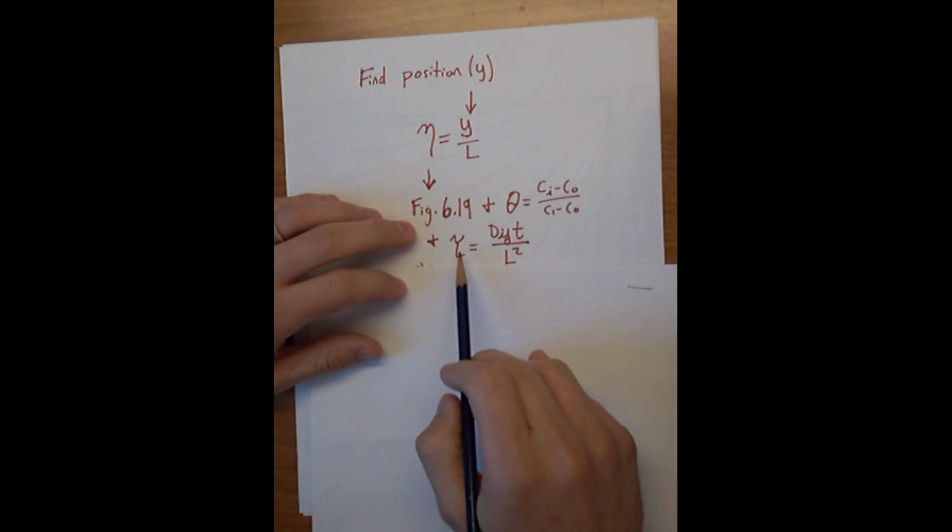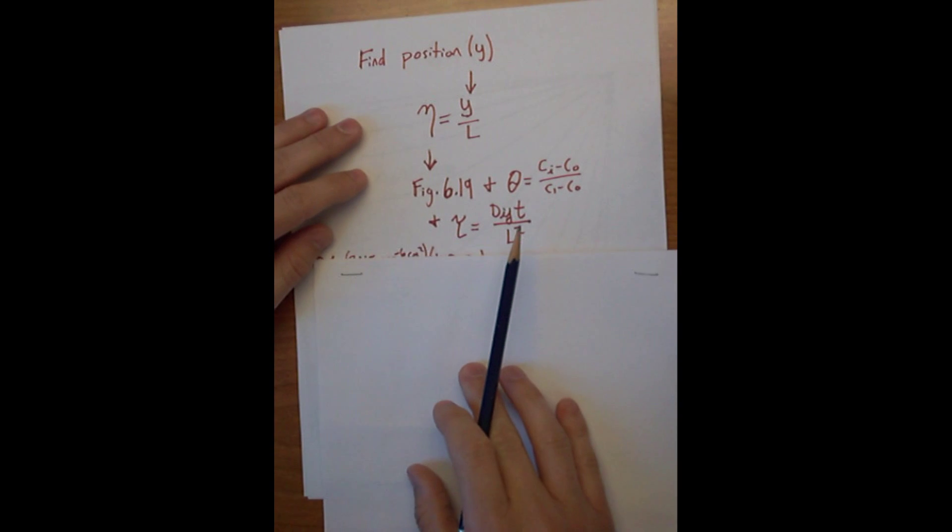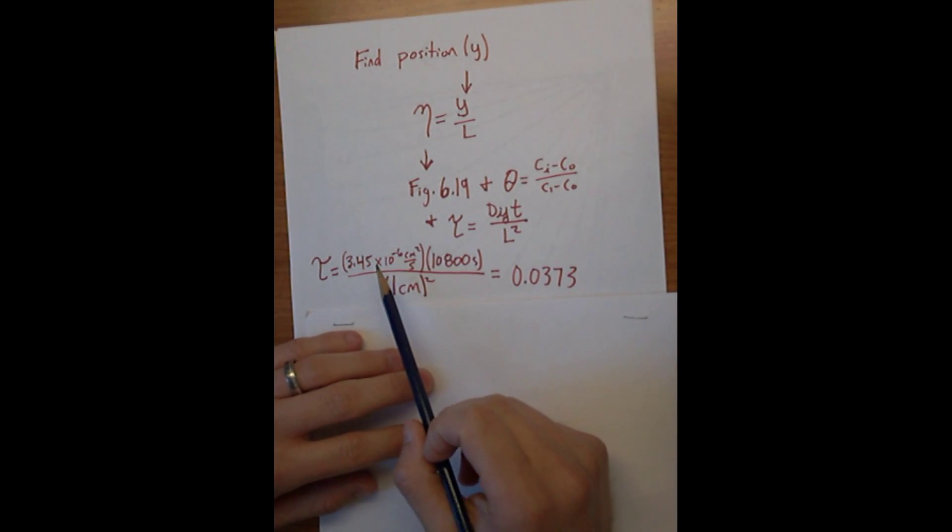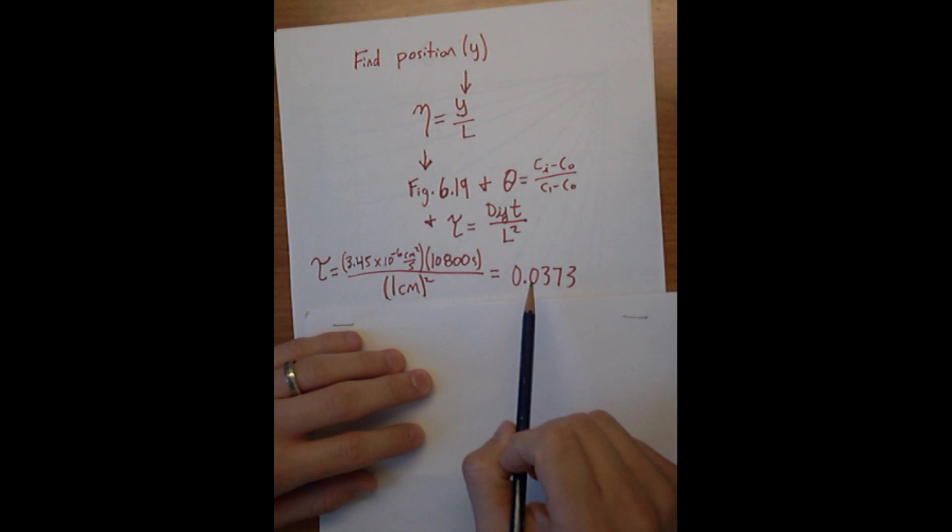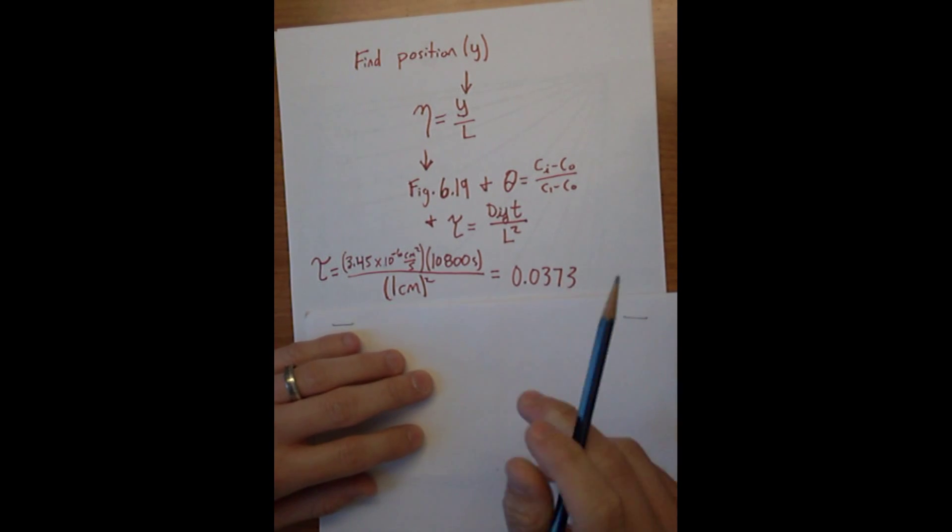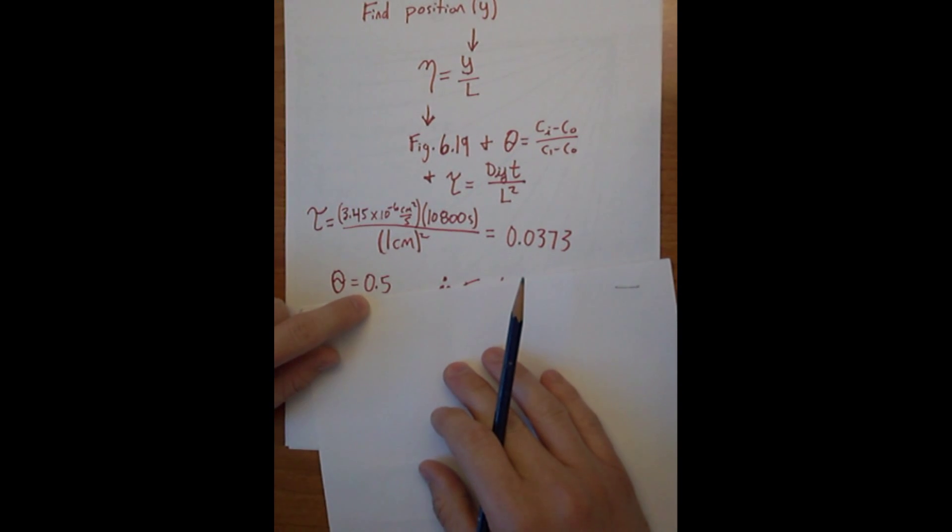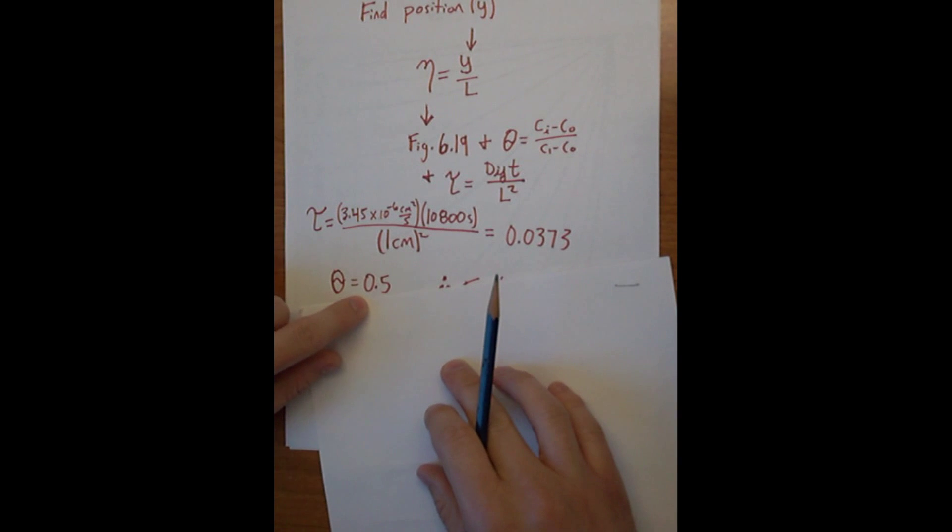If we first calculate these two, then we can use the book to figure out eta, and then we can solve for Y. First, non-dimensionalized time: plug in our diffusion coefficient, the time (three hours), and the half thickness (one centimeter). We get the non-dimensionalized time is 0.037. And we figure out that theta is still equal to 0.5, because it's the same condition before.